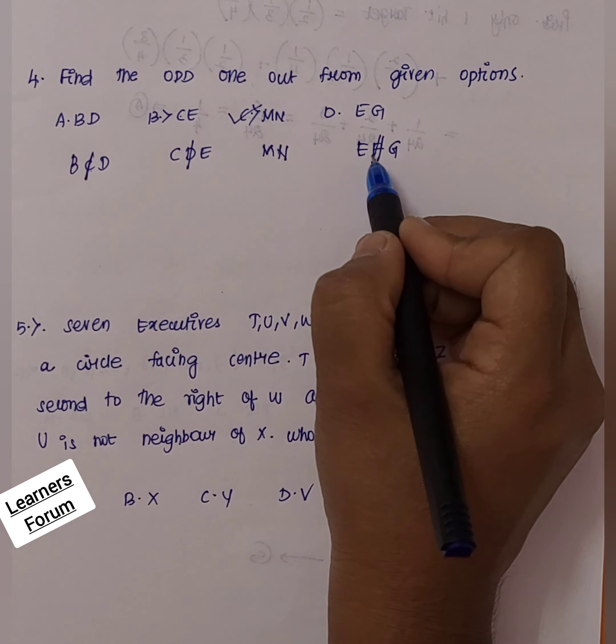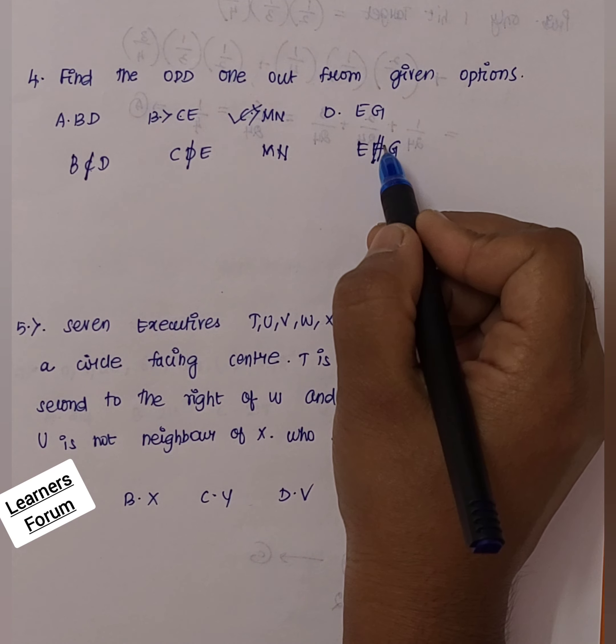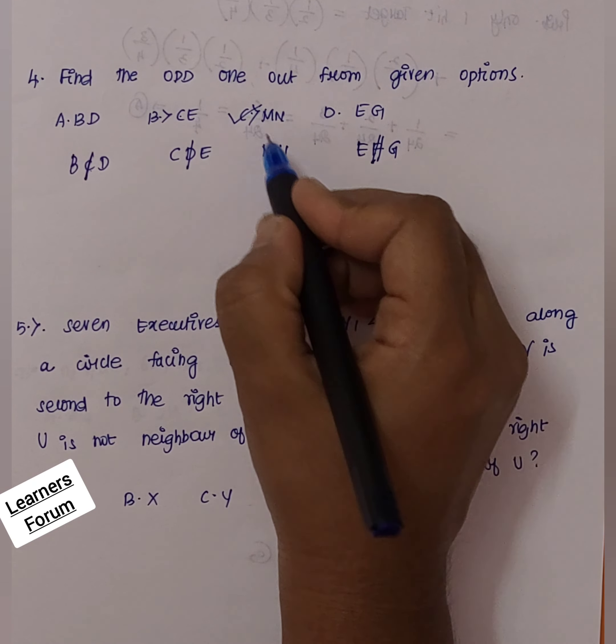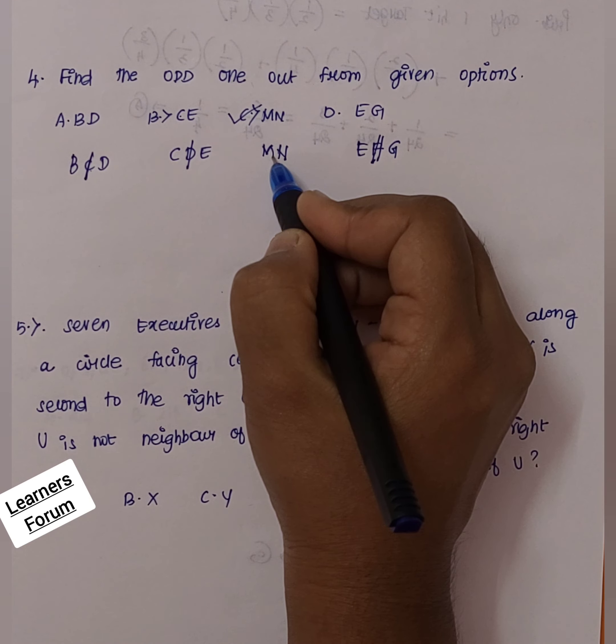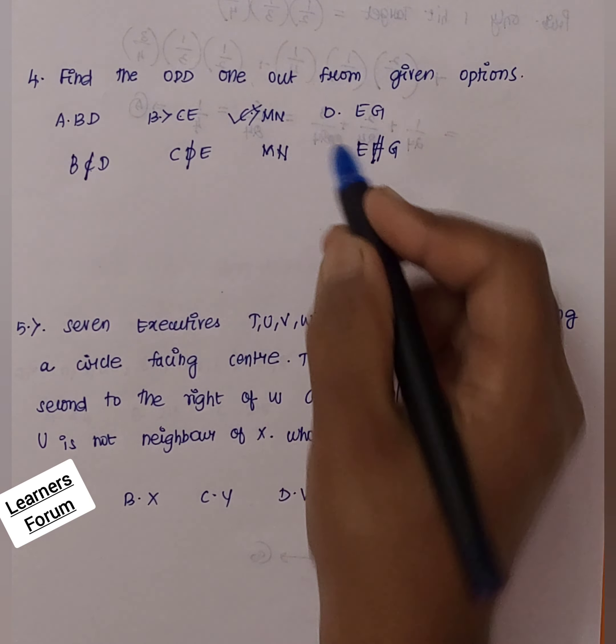A, B, and D follow the same pattern. MN does not follow this pattern — M and N are consecutive letters with none skipped. So MN is the odd one out, and option C is the correct answer.